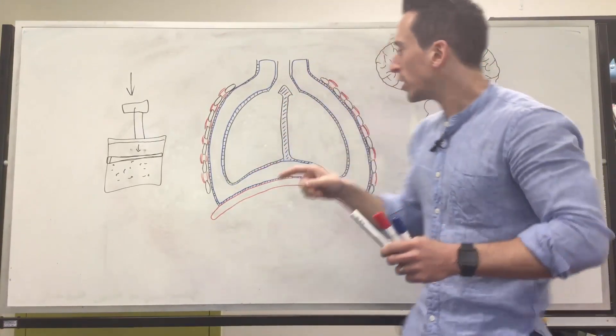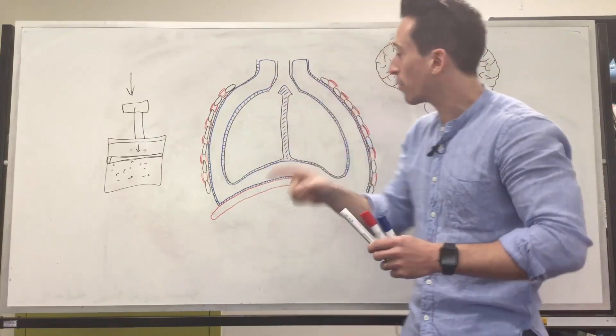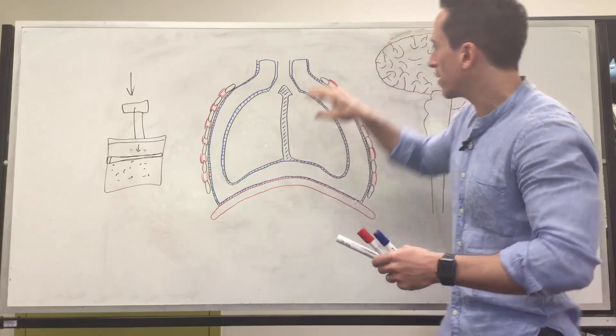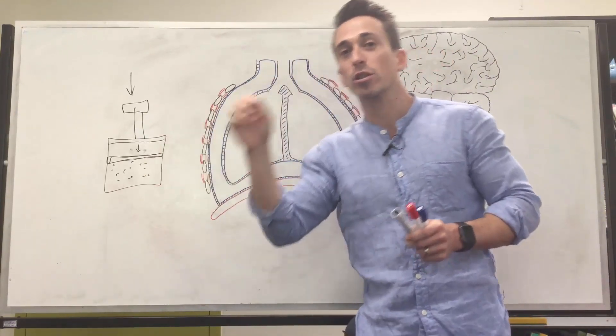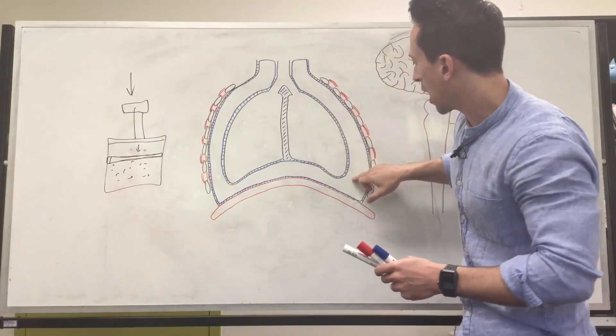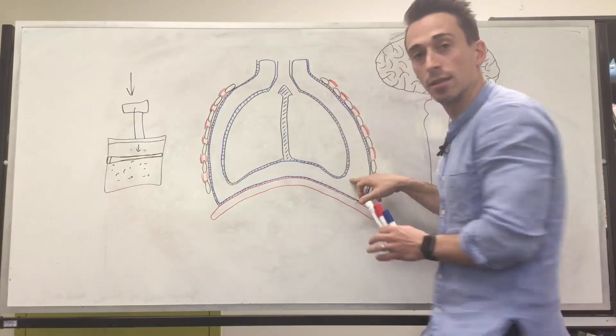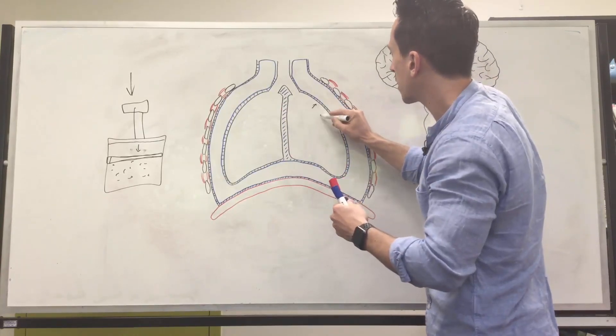And if you were to measure the pressure inside of this pleural cavity, it is lower than the pressure in the lungs. And it's lower than the pressure outside. Now, remember, I said gases want to move from a high pressure to a low pressure. So if in this pleural space, it is a lower pressure than the lungs, then the lungs want to move towards it. So the lungs actually become stuck to it.